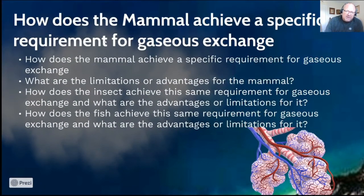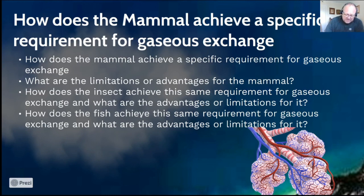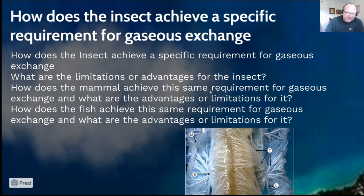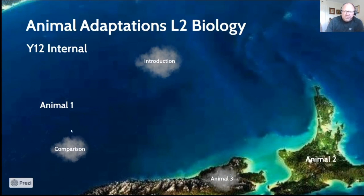For the mammal, state its specific adaptation for that requirement, the advantages or disadvantages, and then compare how the insect and fish do the same thing — are fish better at it? Are insects better? Likewise for the insect comparison. You need three separate comparisons and you cannot repeat yourself. If you don't do the comparison section, the maximum you can get is a Merit. If you complete your introduction, all three animals with their adaptations, and the comparisons showing how they survive in their environments, you can achieve Excellence.